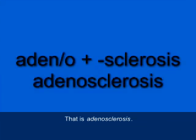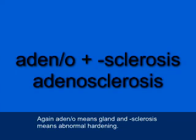What is the term for the abnormal hardening of a gland? That's adenosclerosis — A-D-E-N-O-S-C-L-E-R-O-S-I-S. Adeno means gland, and sclerosis means abnormal hardening.